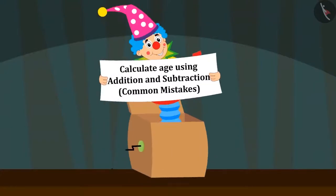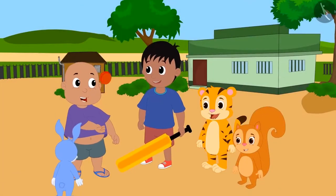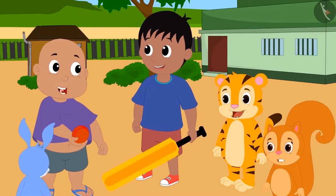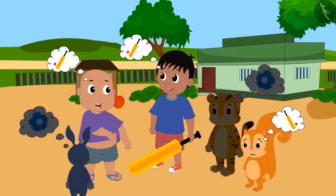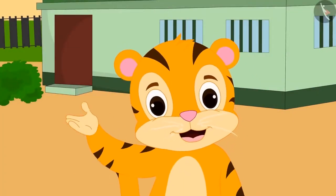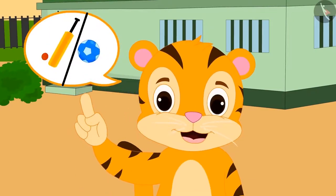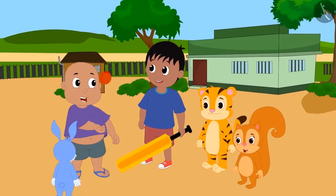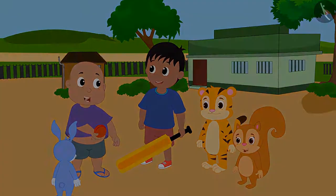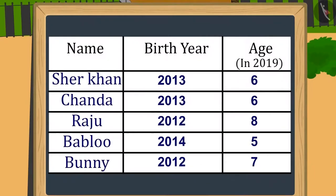In this video, we will learn more and see some common mistakes related to calculating age. All children are deciding together which game they want to play today, but everyone has a different opinion — someone wants to play cricket, someone wants to play football. Then Sher Khan said, why not decide in a unique way? Whosoever is the eldest among them will get to decide which game they all will play. Everybody liked Sher Khan's suggestion, and one by one they wrote the year of birth and age on a board.